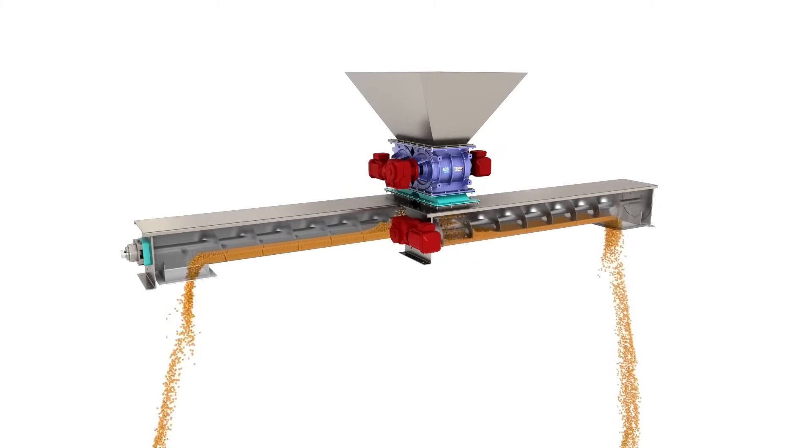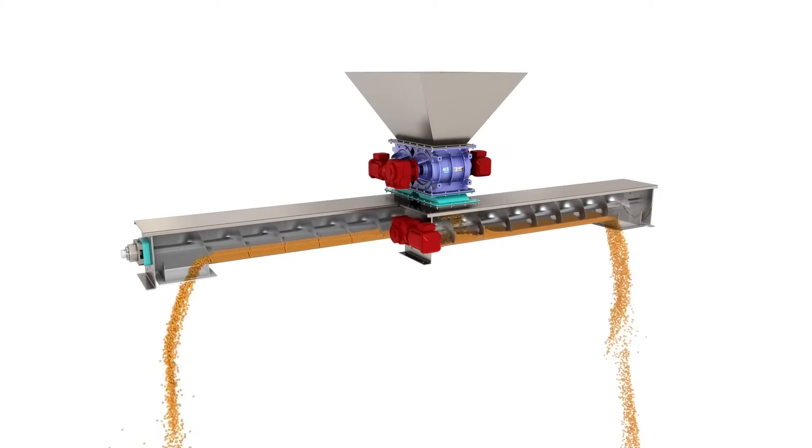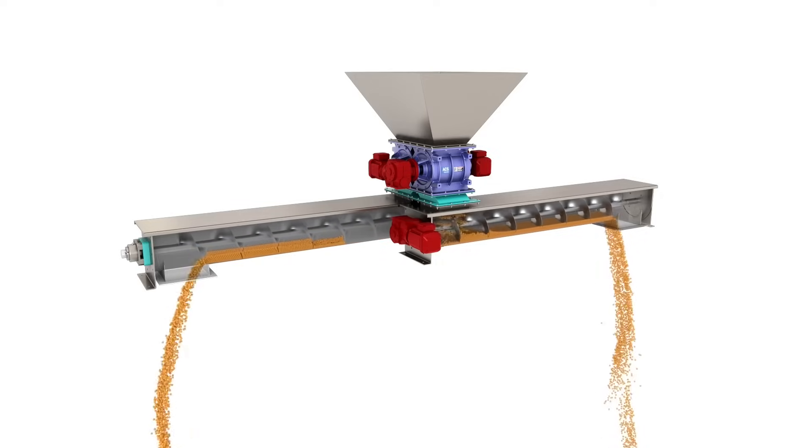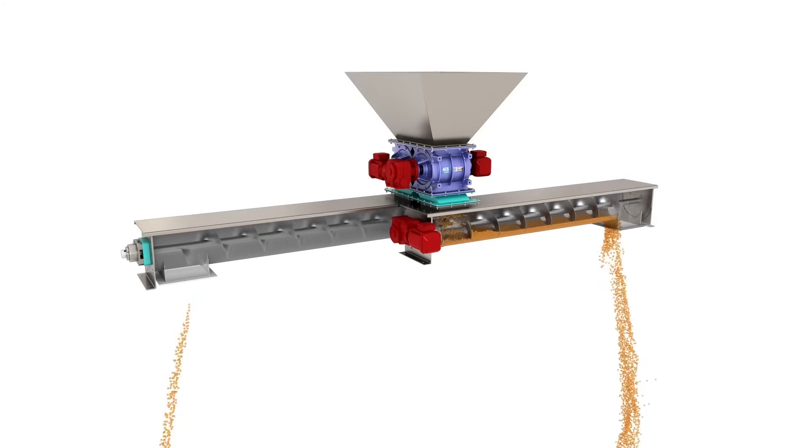Here we are seeing the 12 by 24 inch double airlock multiport valve in action. Two conveyors are attached which direct the feed to two different locations. Either of these two feeds can be switched on or off.